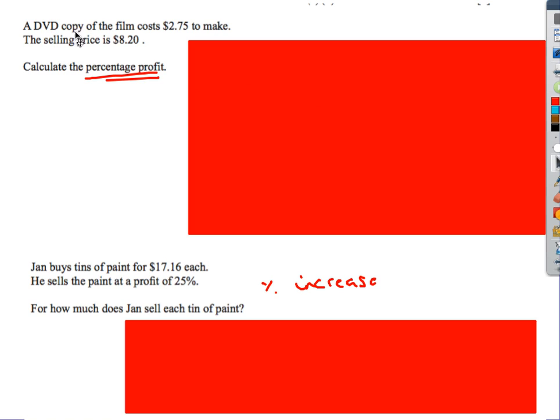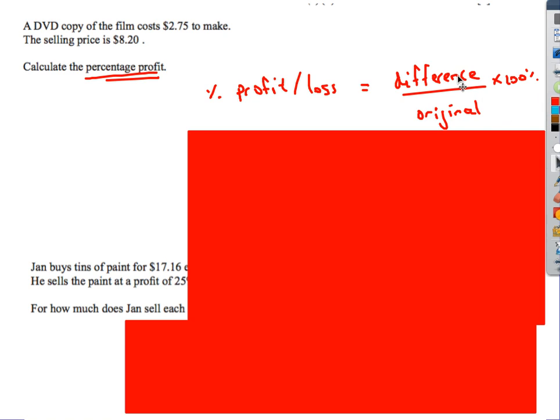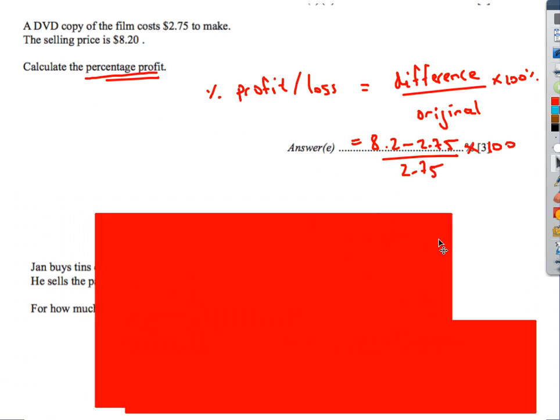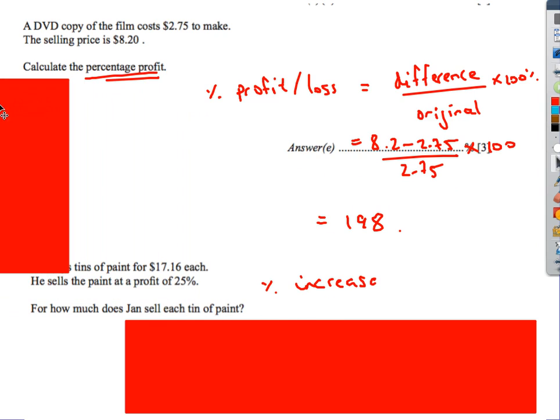Next one. DVD costs $2.75. Selling price is $8.20. Percentage profit. For percentage profit, we look at the difference divided by the original times by 100%. The difference in this case is 8.2 take away 2.75. That's the difference. The original, the amount that it actually cost us was 2.75. So we stick that onto our calculator and we're going to get 198.